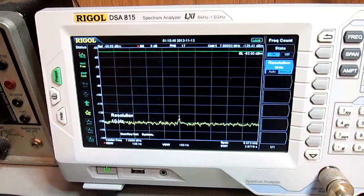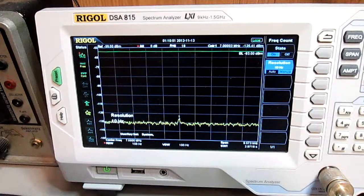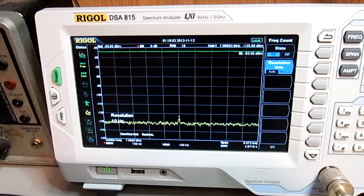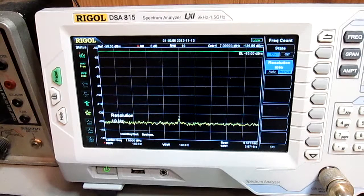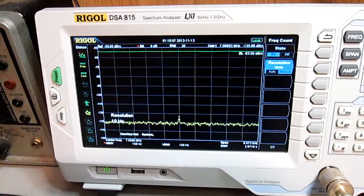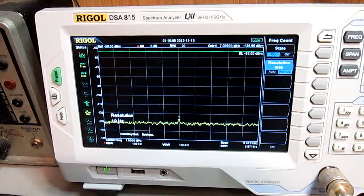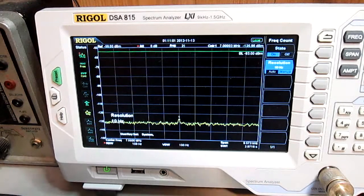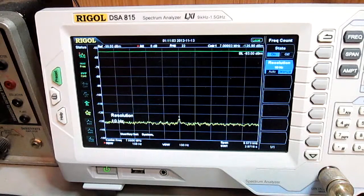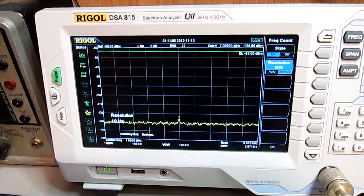There it goes, 7.00003 MHz, now at minus 135.86. As you can see, with the video averaging, it's slowly cleaning up the noise and showing you that weak signal right down in the mud there.